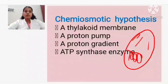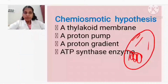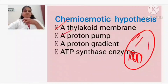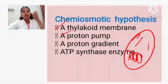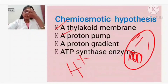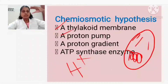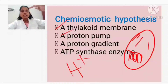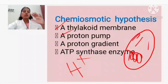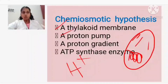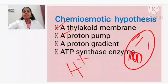In chemiosmotic hypothesis, we need to see what is required for this process. Number one is the thylakoid membrane. Number two is a proton pump - the hydrogen ions, H+ (positively charged particles), have to be pumped. There should be a proton gradient, meaning concentration should be high in some places and low in others, so particles move from high to low. Another important thing is that ATP synthetase enzyme should also be present for this reaction to take place.